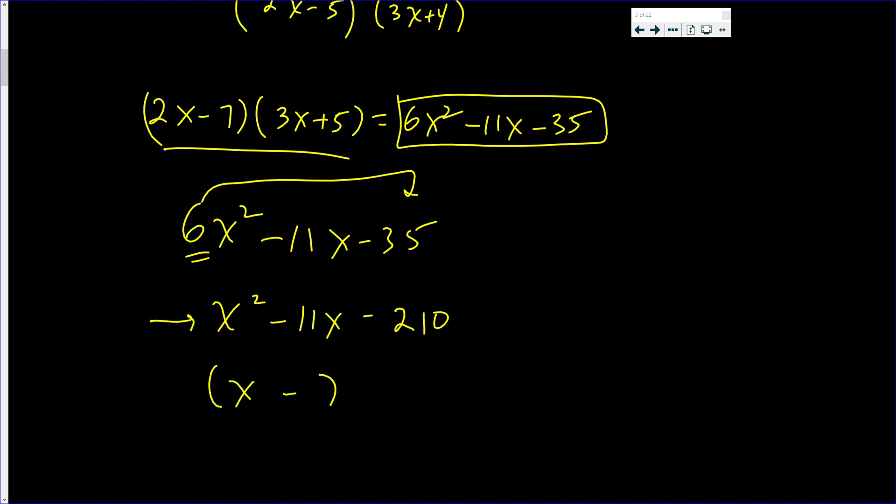X followed by a number times x followed by a number. However, the two numbers should multiply out to negative 210 and add up to 11. Well, 21 and 10, they multiply out to 210, and the difference is 11.